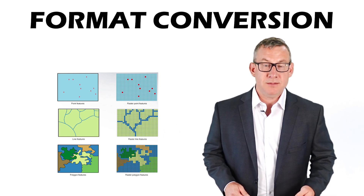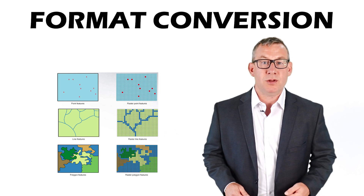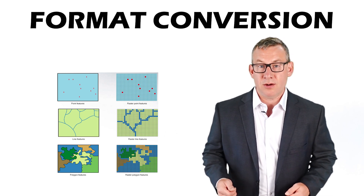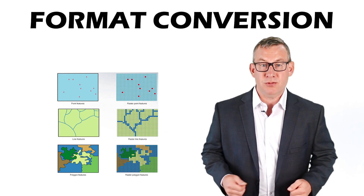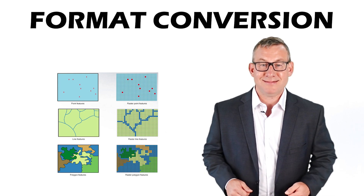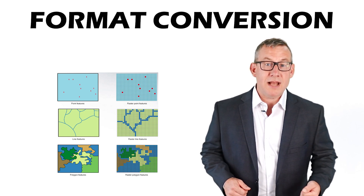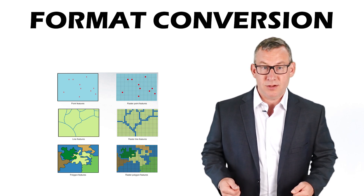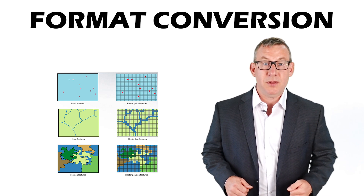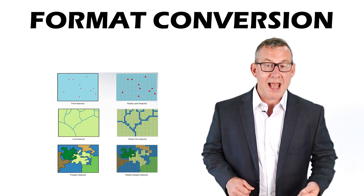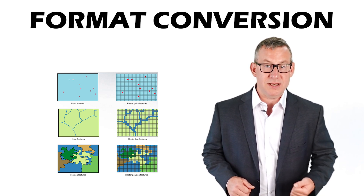Format conversion refers to converting data from one form to another, such as from vector to raster. Raster to vector conversion is not difficult because you can just use the center point of each pixel as points for the features.